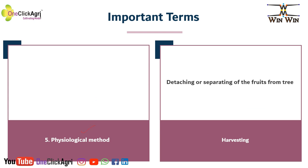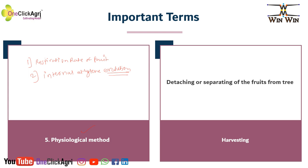Next is the Physiological method. In that, the reaction is considered. First is respiration rate of fruit. Second is internal ethylene evolution. On the basis of these five different types of methods, we judge the maturity of the fruits.